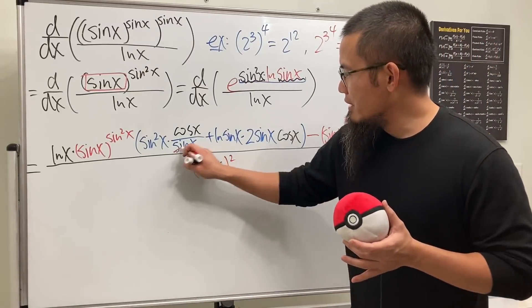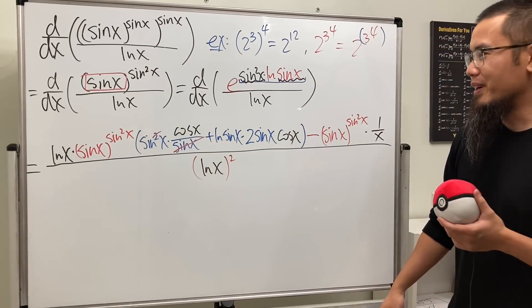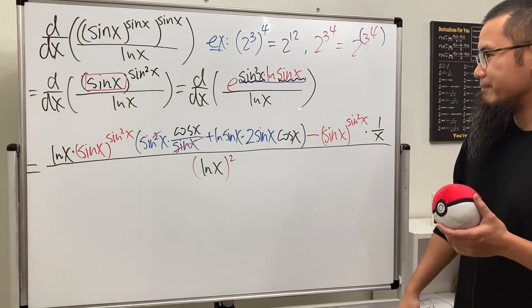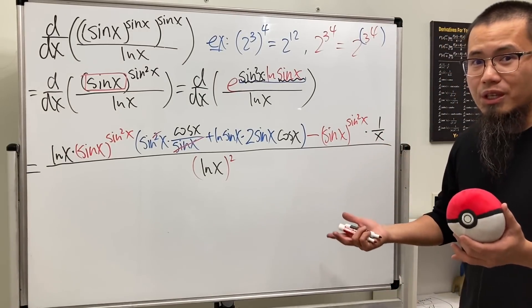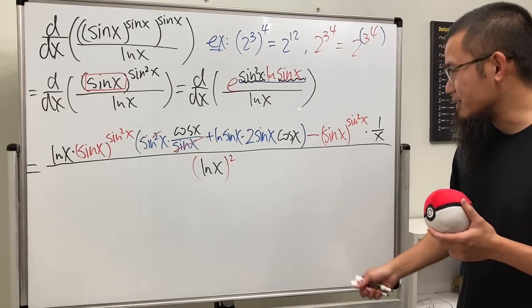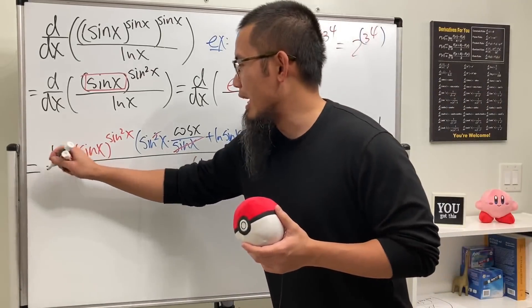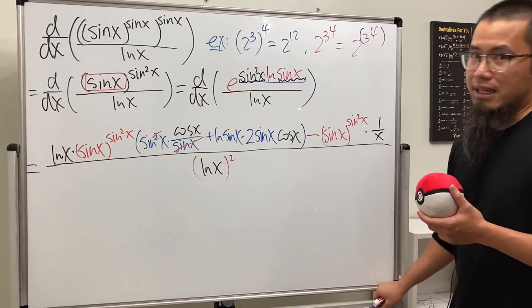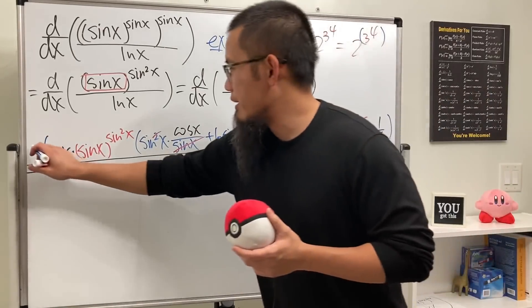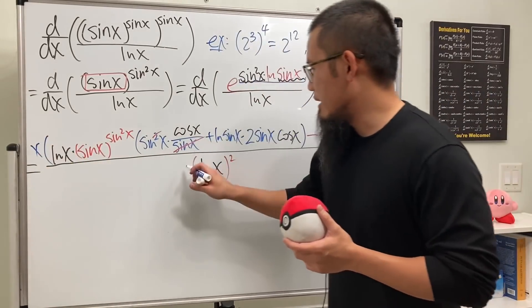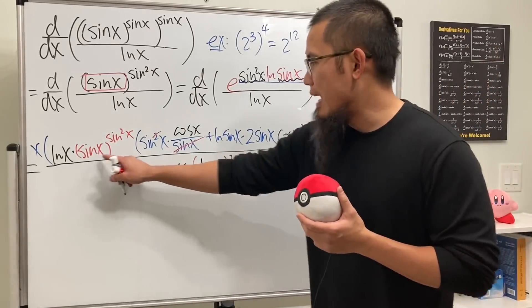Some things cancel out — nice! And since we have a 1/x creating a complex fraction, we multiply everything by x to clear it, so that we can fix the complex fraction situation.